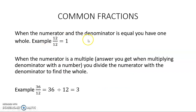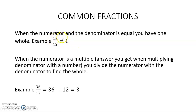Now when the numerator and your denominator are equal to each other, you will have one whole. Divide it into 12 parts and you have all 12 of them — 12 over 12 will give me 1.